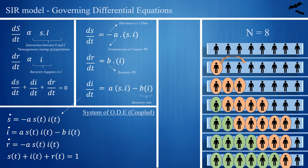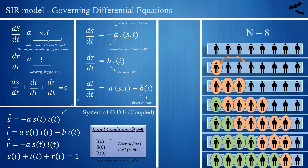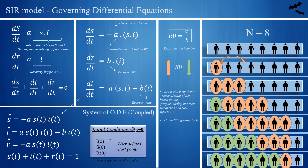In the case studies I've read, I came across an important number called the reproduction number, which is simply the ratio of transmission weight A to recovery weight B. A high disease reproduction number is not desirable; the objective is to have a low R0 value. Some questions I asked myself while modeling: Are A and B random? How do I estimate A and B? Upon reading journals, I understood that the ratio between A and B can be sensed based on the proportionality between recovered and new infections. I tried some curve fitting using least squares method, and at the end I simply adjusted A and B values to match previously known data. Remember, there is no fixed value of A and B — it is highly variable and changes with respect to time.